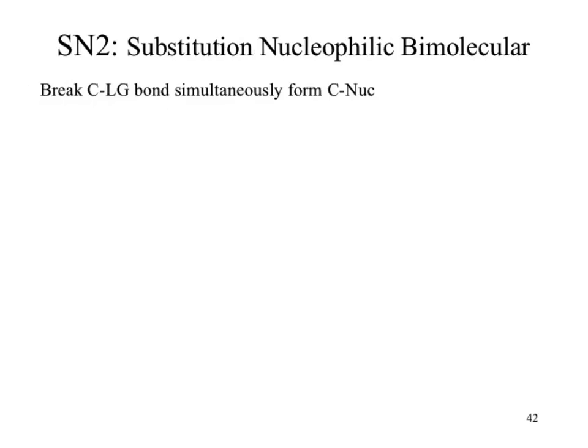In our nucleophilic bimolecular substitution reaction — that's where the symbols come from: S for substitution, N for nucleophilic, 2 for bimolecular — there are two simultaneous events: we break the leaving group bond and make the carbon–nucleophile bond at the exact same instant.